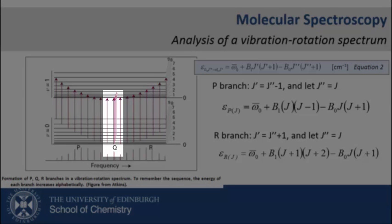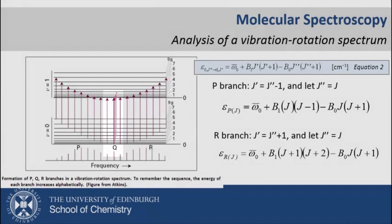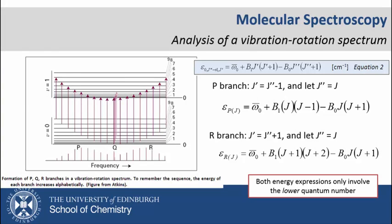The Q-branch transitions are marked in the diagram, but as they involve a ΔJ=0, we do not observe them in the spectrum. You'll note here that both our R and P transition energies now involve only the lower rotational quantum number J.